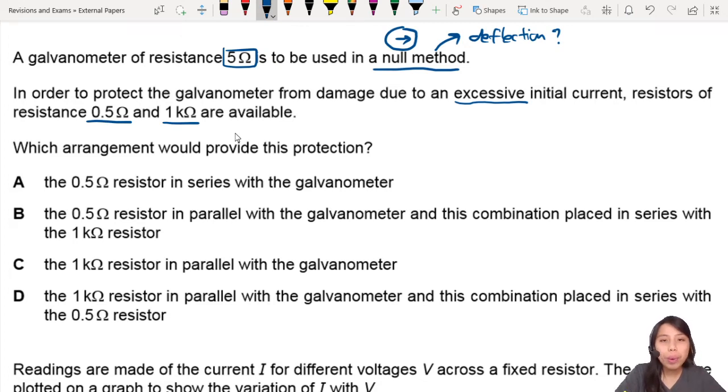Let's look at option A: 0.5Ω in series with the galvanometer. The galvanometer is 5Ω, right? I'll draw a circle. It looks okay. You will reduce the current flowing through the whole thing because of the resistance. Maybe A is correct, but let's continue on first.